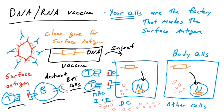DNA vaccines are very similar to subunit vaccines in that we are generating an immune response to one specific protein of the pathogen. In a subunit vaccine, you are injected with the protein. In a DNA vaccine, you are injected with the instructions on how to make that protein. There are no FDA-approved DNA vaccines on the market right now.